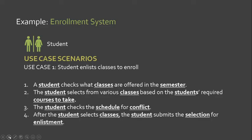We can begin by conducting a grammatical parse of each use case scenario we have identified. We list down nouns and noun phrases for each use case scenario as potential classes. We then check if these nouns or potential classes are necessary to implement a solution — if so, they are part of the solution space. If a class is used to describe a solution, then it is part of the problem space. In these examples, I underlined all potential classes.